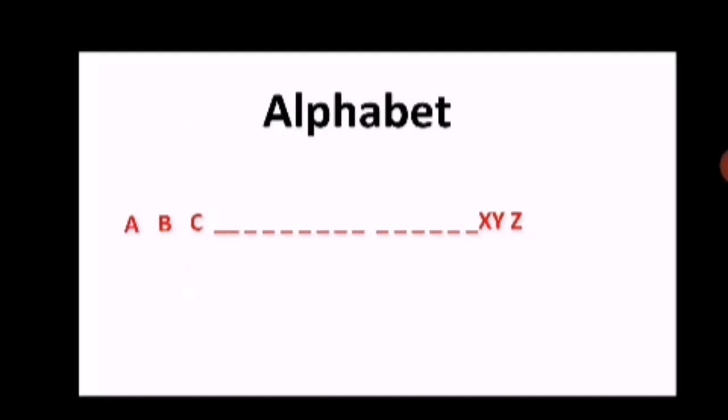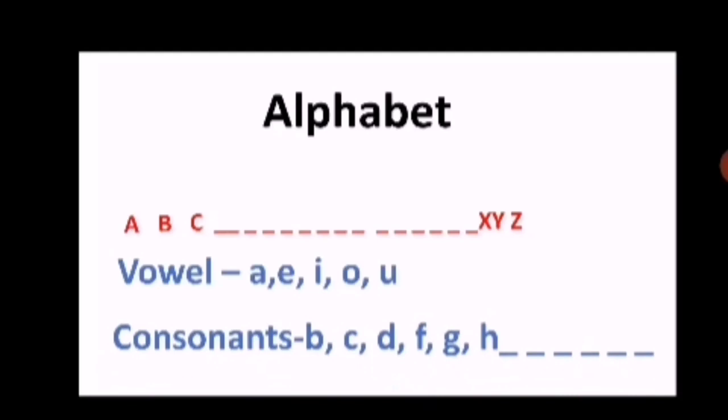Yes, every language has an alphabet, means a set of letters. In English, we have A to Z, 26 letters. They are divided in two, that is vowel and consonant.